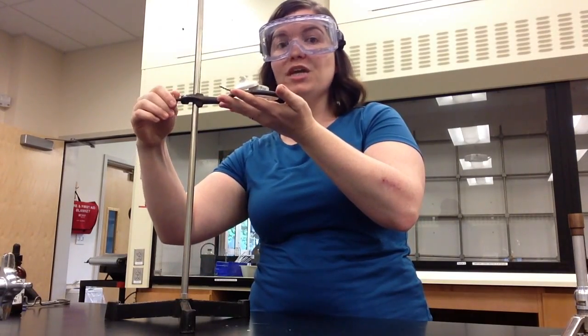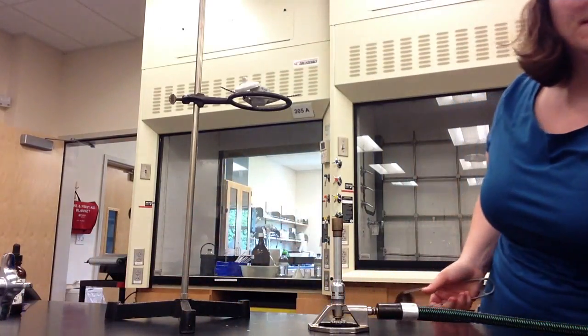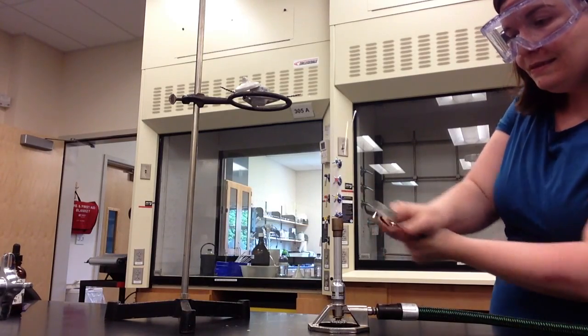You're going to begin by gently heating the potassium chlorate in the crucible for 8 minutes. To gently heat, the crucible should be 6 to 8 centimeters above the inner cone of the Bunsen burner flame. I'm going to light my Bunsen burner. Turn on the gas. Use my striker to light the Bunsen burner.